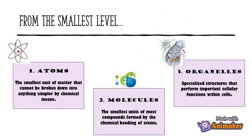Let's start with the simplest level. Atoms are the smallest unit of matter that cannot be broken down into anything simpler by chemical means. Molecules are the smallest units of most compounds, formed by the chemical bonding of atoms.